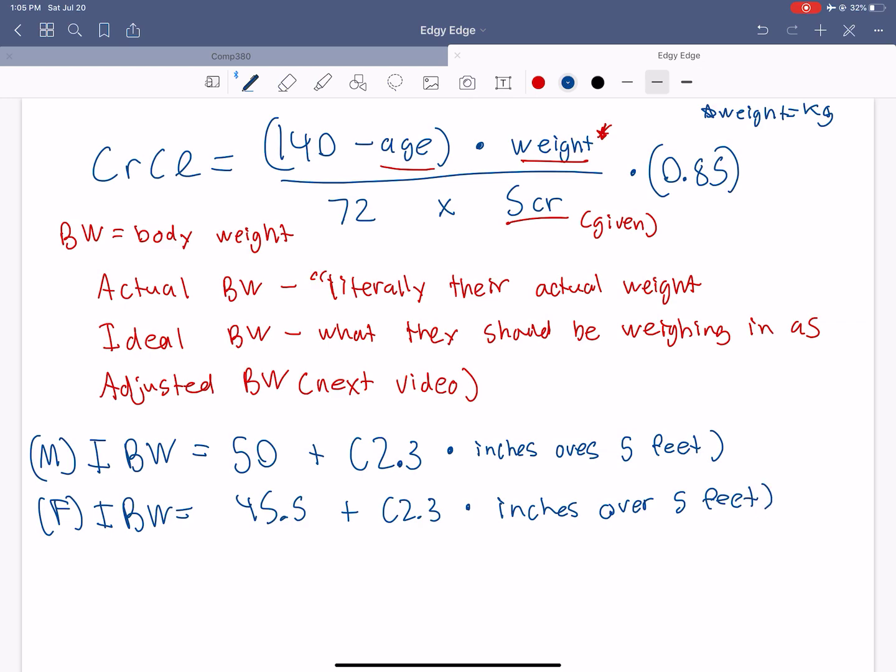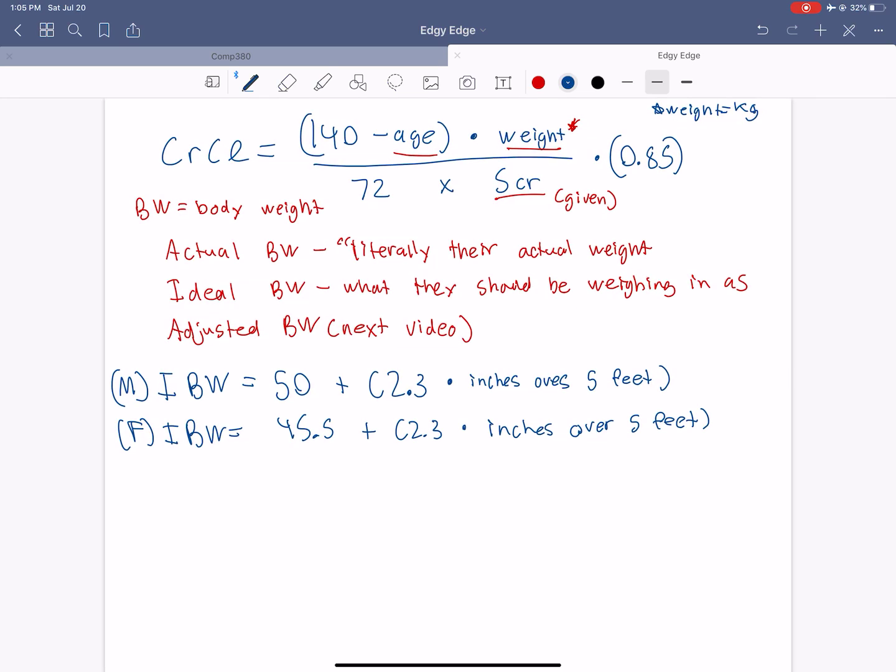So it's basically the same formula, except for ideal body weight, it's 50 for males here and 45.5. So it's just a calculation. So what they're doing is estimating what their weight should be around, depending on how big or how tall they are.